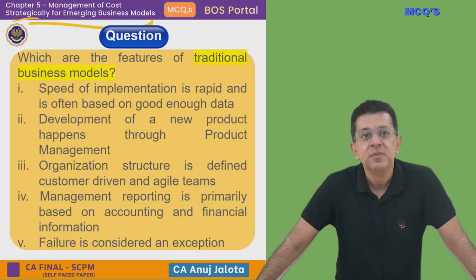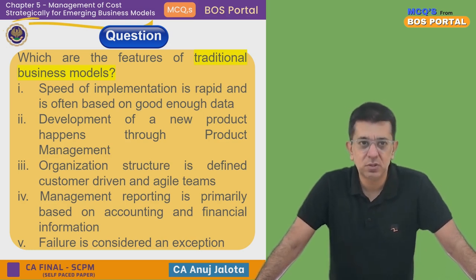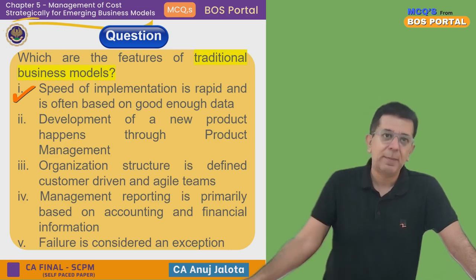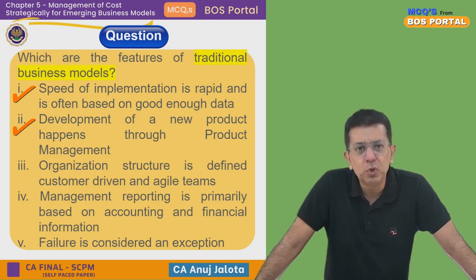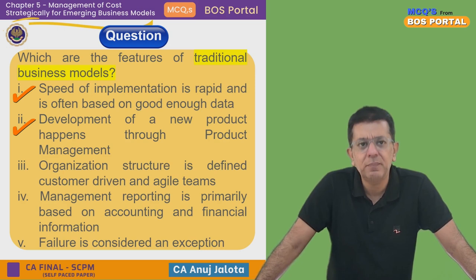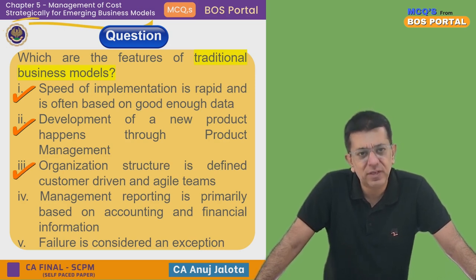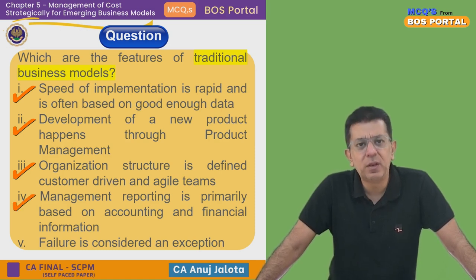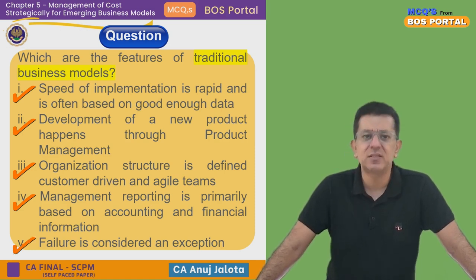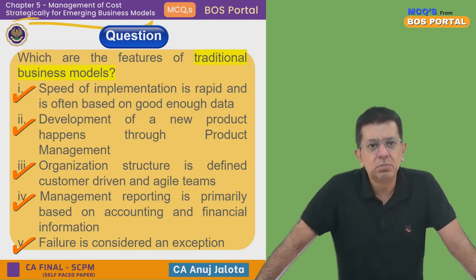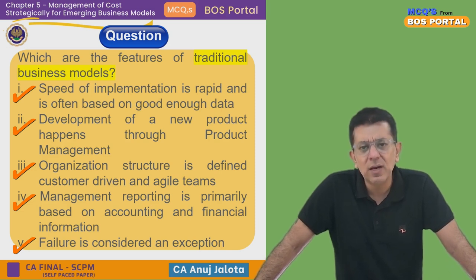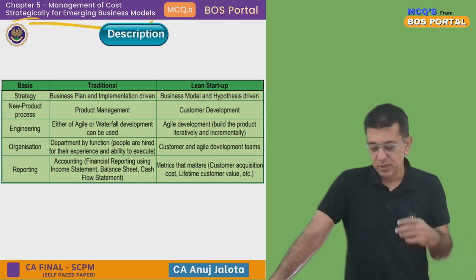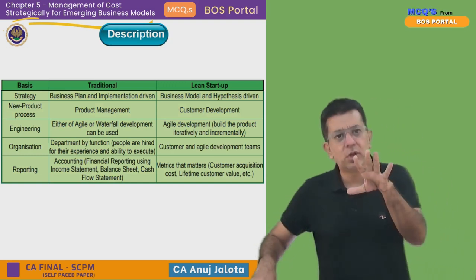Chapter 5 question: What are the features of traditional business models? The options include: speed of implementation is rapid and often based on good enough data; development of new products happens through product management; organization structure is defined as customer-driven and agile teams; management reporting is primarily based on accounting and financial information; and failure is considered as an exception. Let's first look at how traditional business models differ from startups.